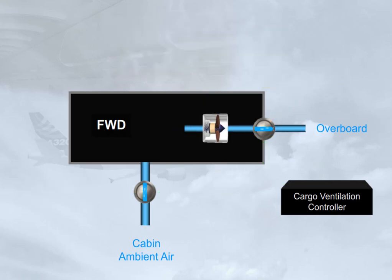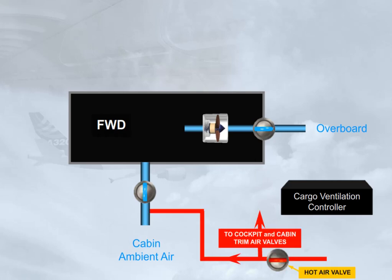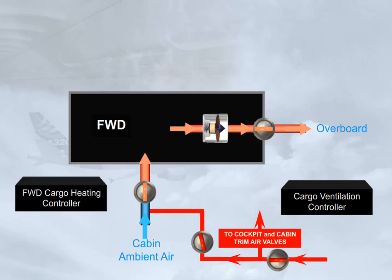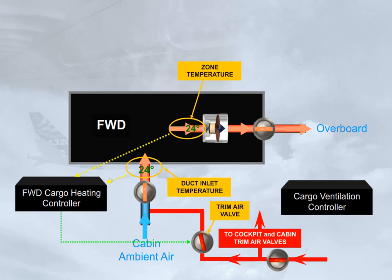For the forward cargo heating system, if installed, hot bleed air from the cockpit and cabin hot air duct is supplied via a trim air valve. The operation of the cargo trim air system is very similar to the trim air system of the air conditioning system. The forward cargo heating controller controls the related trim air valve and monitors the related duct inlet and zone temperatures. Compartment heating is not available when the forward cargo door is open or when the hot air valve is closed.